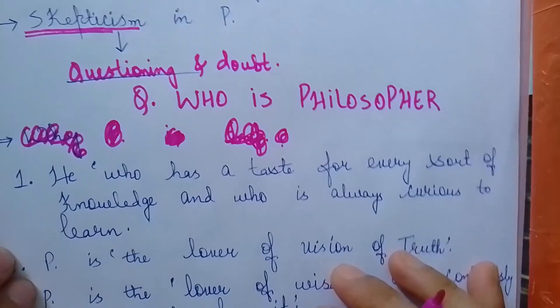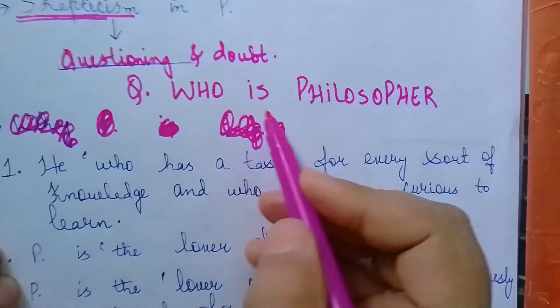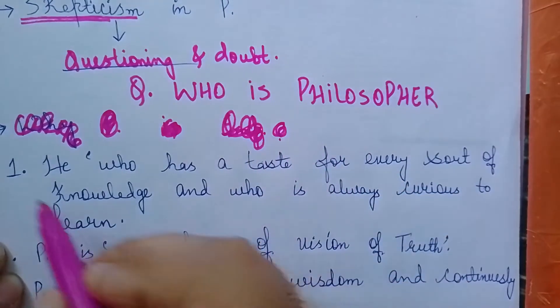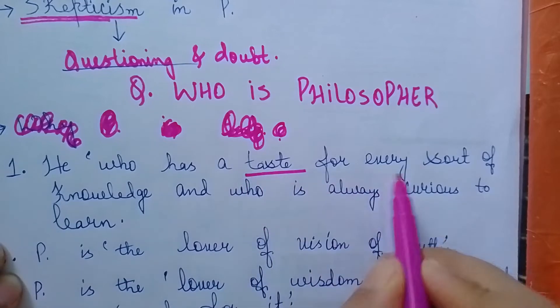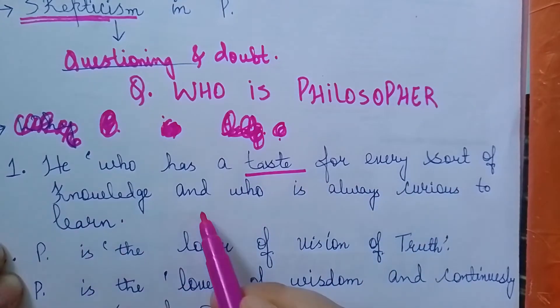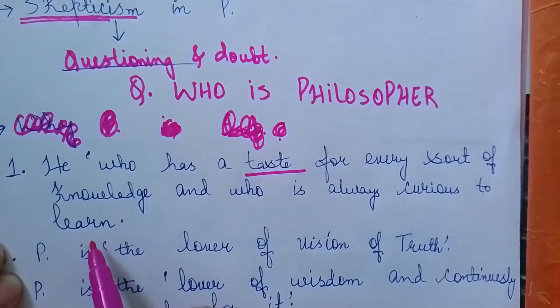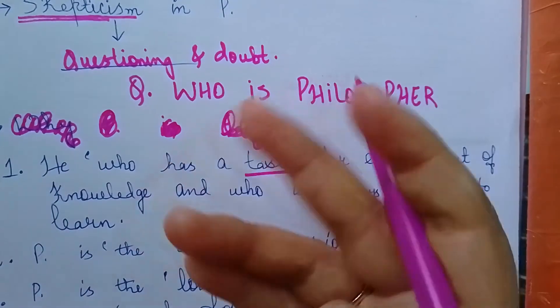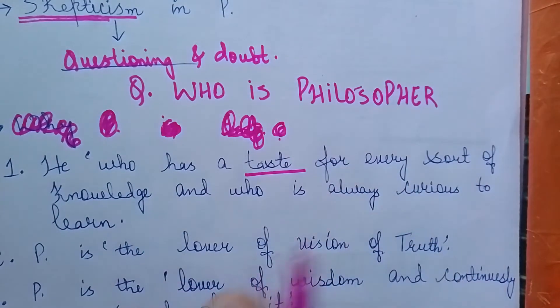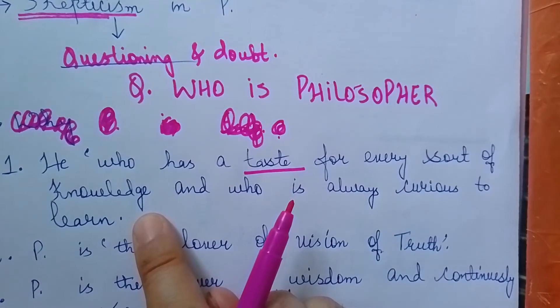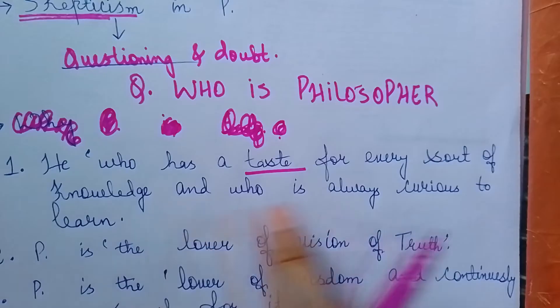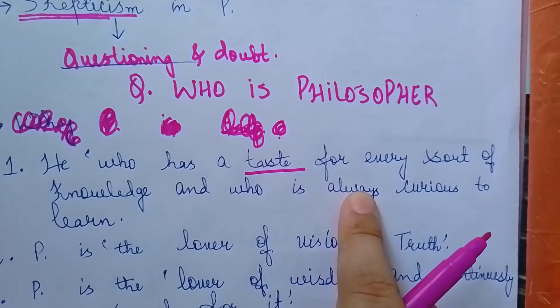Who is a philosopher? First, he who has a taste for every sort of knowledge and who is always curious to learn. A philosopher has every kind of knowledge or is curious to learn. We call him a philosopher.